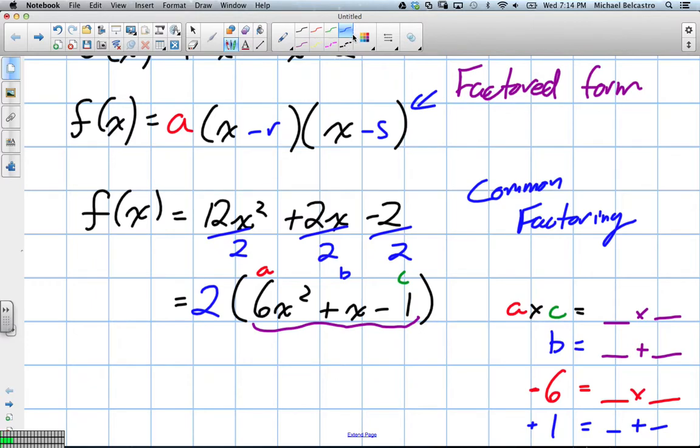Well, two numbers that multiply to 6 are 3 and 2. And we could get them to add to positive 1 also. If we use the value of positive 3 and negative 2, we'll fulfill both of those, right?